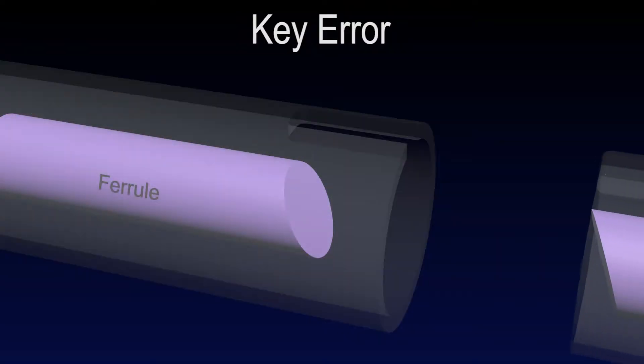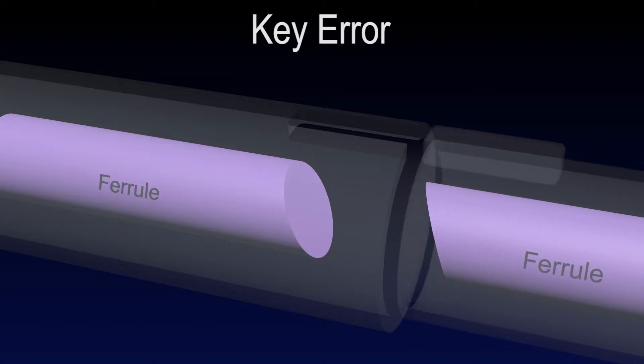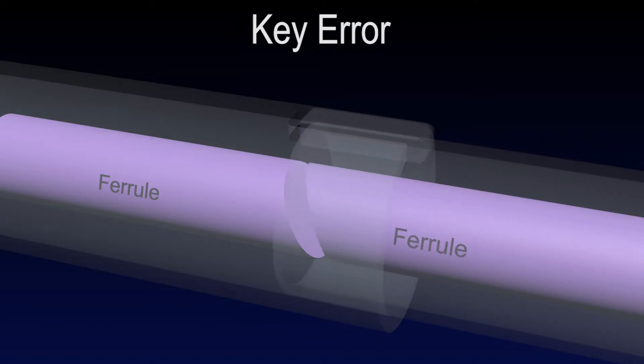Key error is a measure of the orientation of the end-face angle with respect to the connector key. If the error is too great, the ferrules will not line up properly during mating, resulting in an air gap between the two.